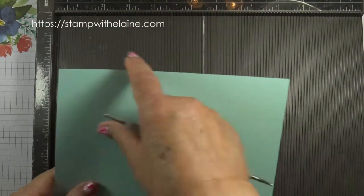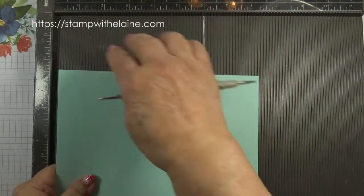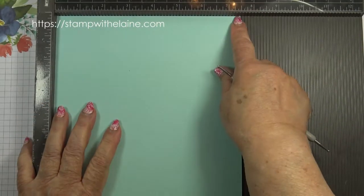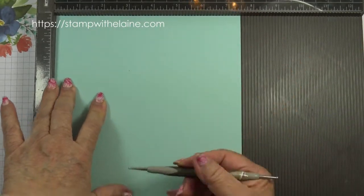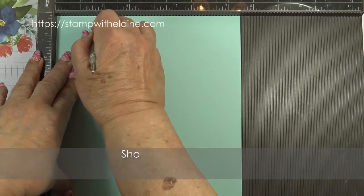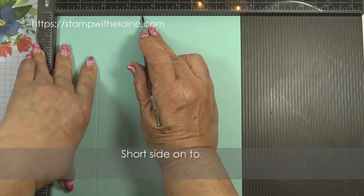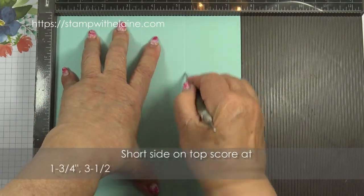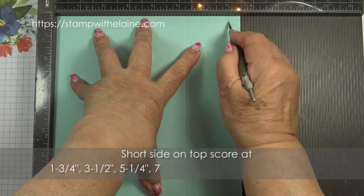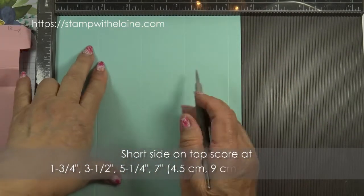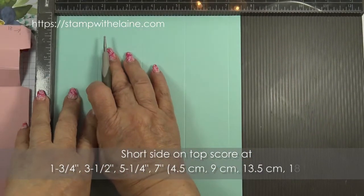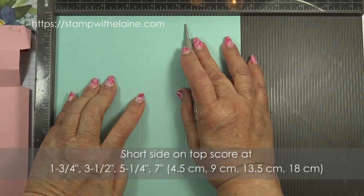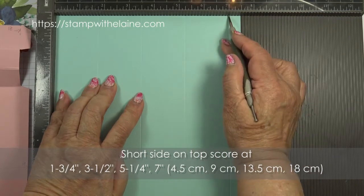We'll start putting the short side at the top of the scoreboard. So this is the seven and a half inch side, and we score at one and three quarter inches, three and a half inches, five and a quarter inches, and seven inches. In metric this will be 4.5 centimeters, 9 centimeters, 13.5 centimeters, and 18 centimeters.